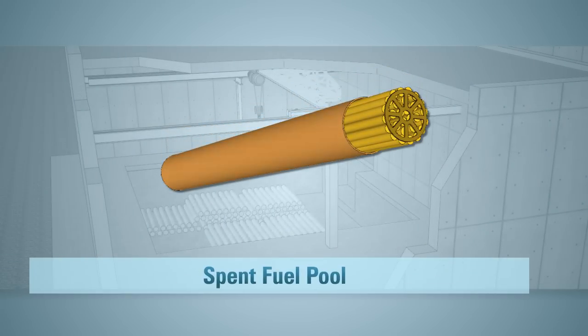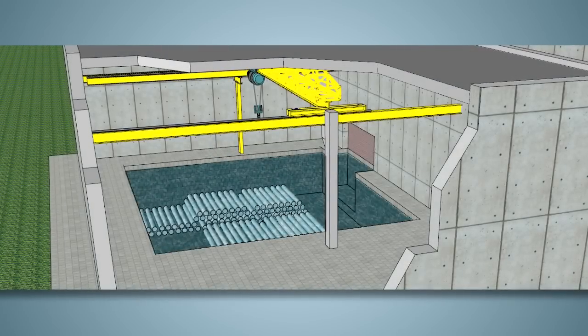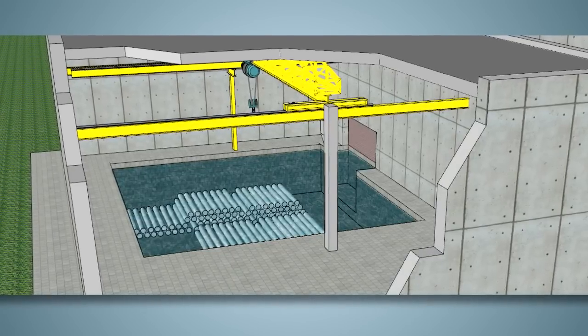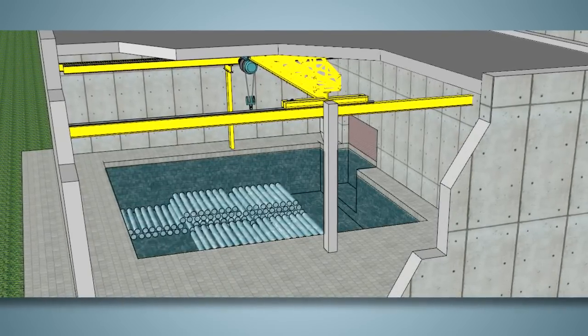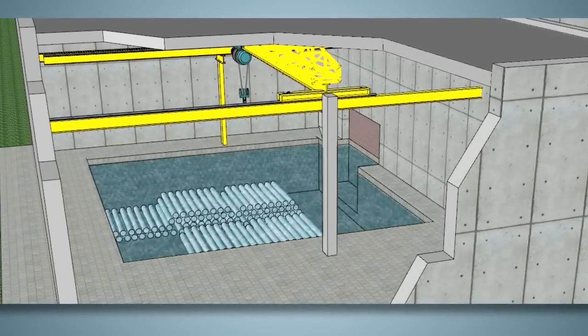Once used, the uranium, or nuclear fuel, is kept in pools for about six to ten years to keep it cool and provide shielding against radiation. Unlike Fukushima, spent fuel pools at CANDU nuclear power plants are constructed in the ground.